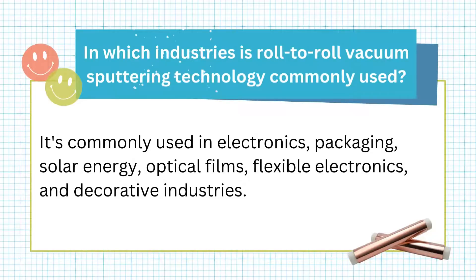In which industries is roll-to-roll vacuum sputtering technology commonly used? It's commonly used in electronics, packaging, solar energy, optical films, flexible electronics, and decorative industries.